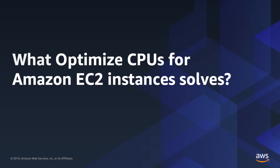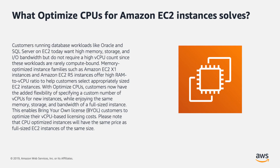Customers running database workloads like Oracle and SQL Server on EC2 today want high memory, storage, and I/O bandwidth, but do not require high vCPU count since these workloads are rarely compute-bound. Memory-optimized instance families such as Amazon EC2 X1 instances and Amazon EC2 R5 instances offer a high RAM to vCPU ratio to help customers select appropriately sized EC2 instances.